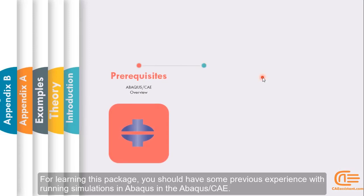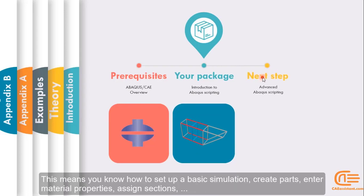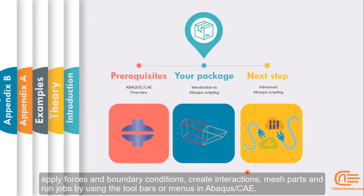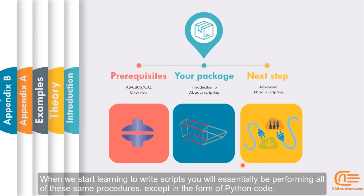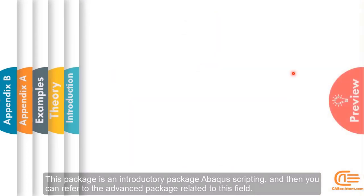For learning this package, you should have some previous experience with running simulations in Abaqus CAE. This means you know how to set up a basic simulation, create parts, enter material properties, assign sections, apply force and boundary conditions, create interactions, mesh parts, and run jobs using the toolbars or menu. When you start learning to write scripts, you will essentially be performing all these same procedures except in the form of Python code. This package is an introductory package of Abaqus scripting, and then you can refer to the advanced package related to this field.